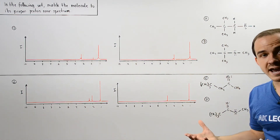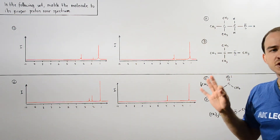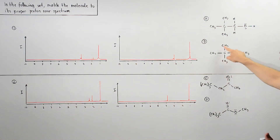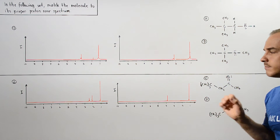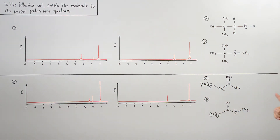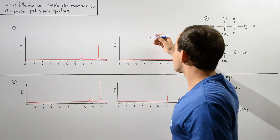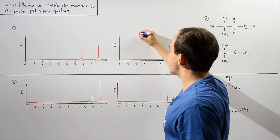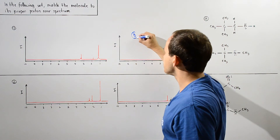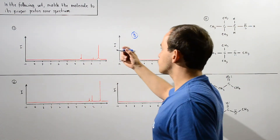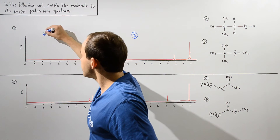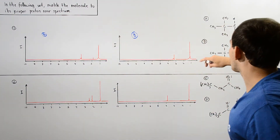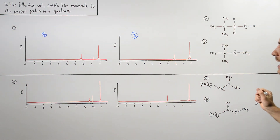Molecule A contains three different types of H's, meaning there should be three different signals. Molecule B contains only two different types of H's, so that implies there must be two different signals. That means we can readily match the second proton NMR spectrum to molecule B and the first proton NMR spectrum to molecule A, since we know we should have three different signals corresponding to each type of H atom.